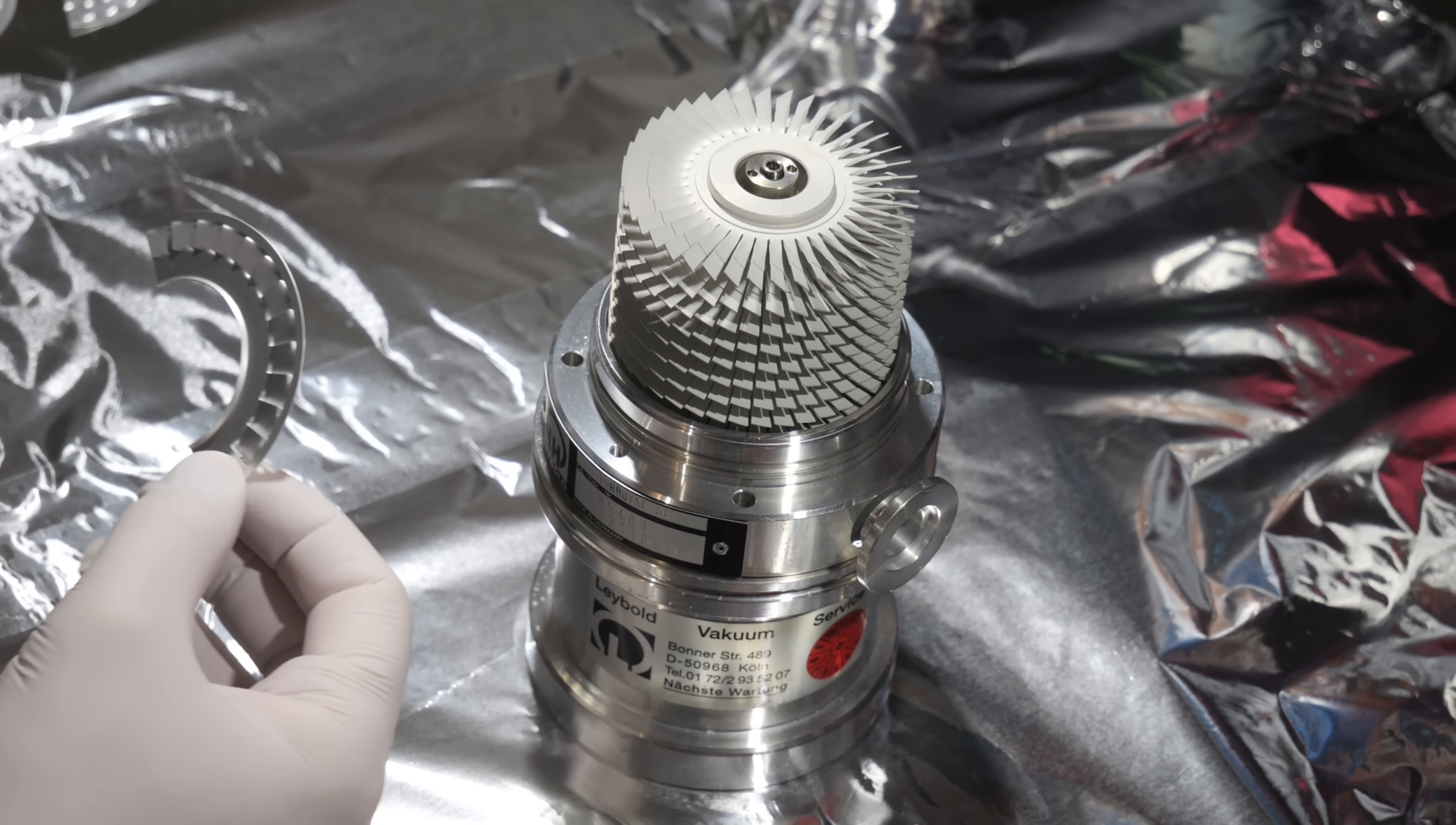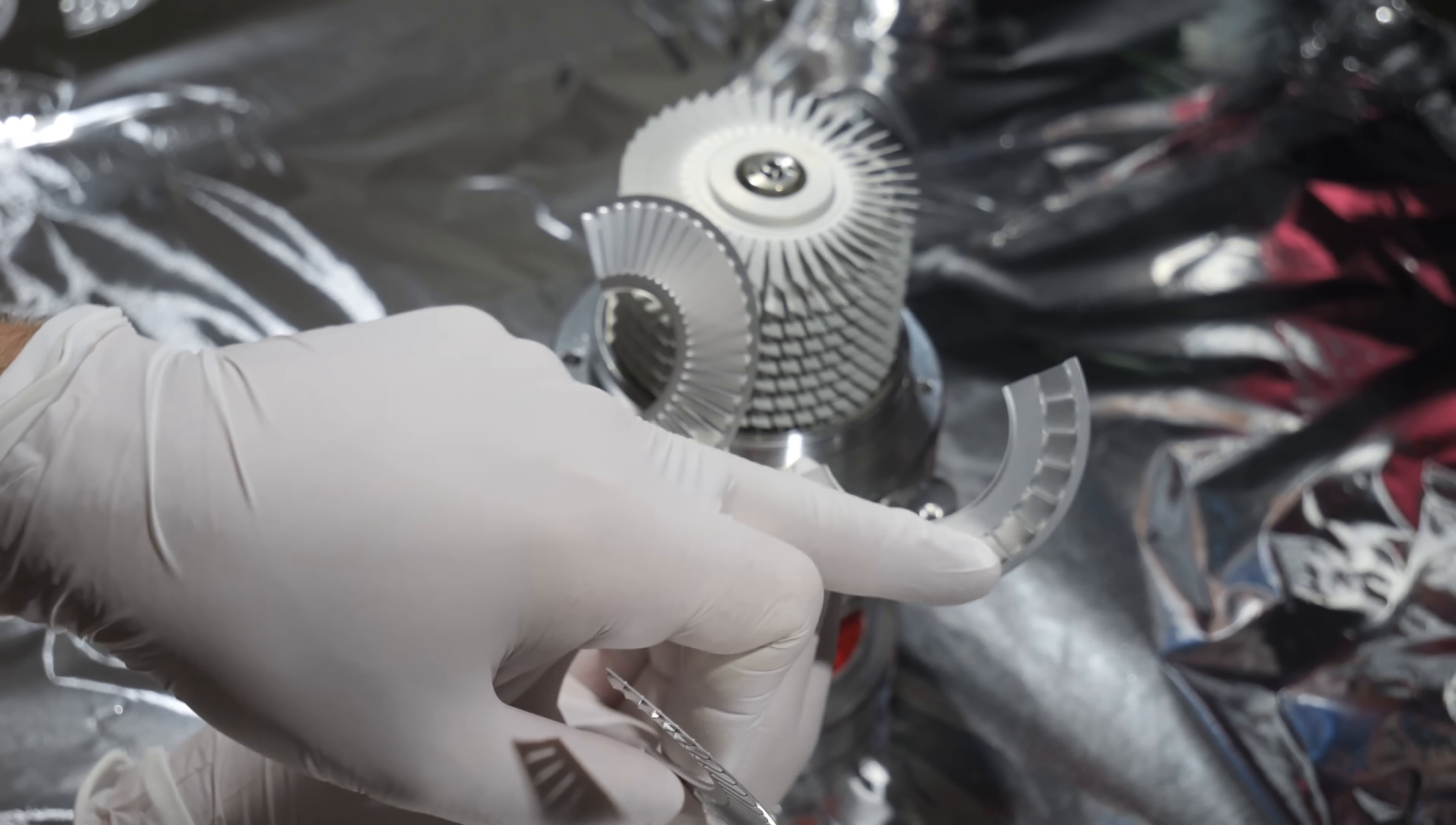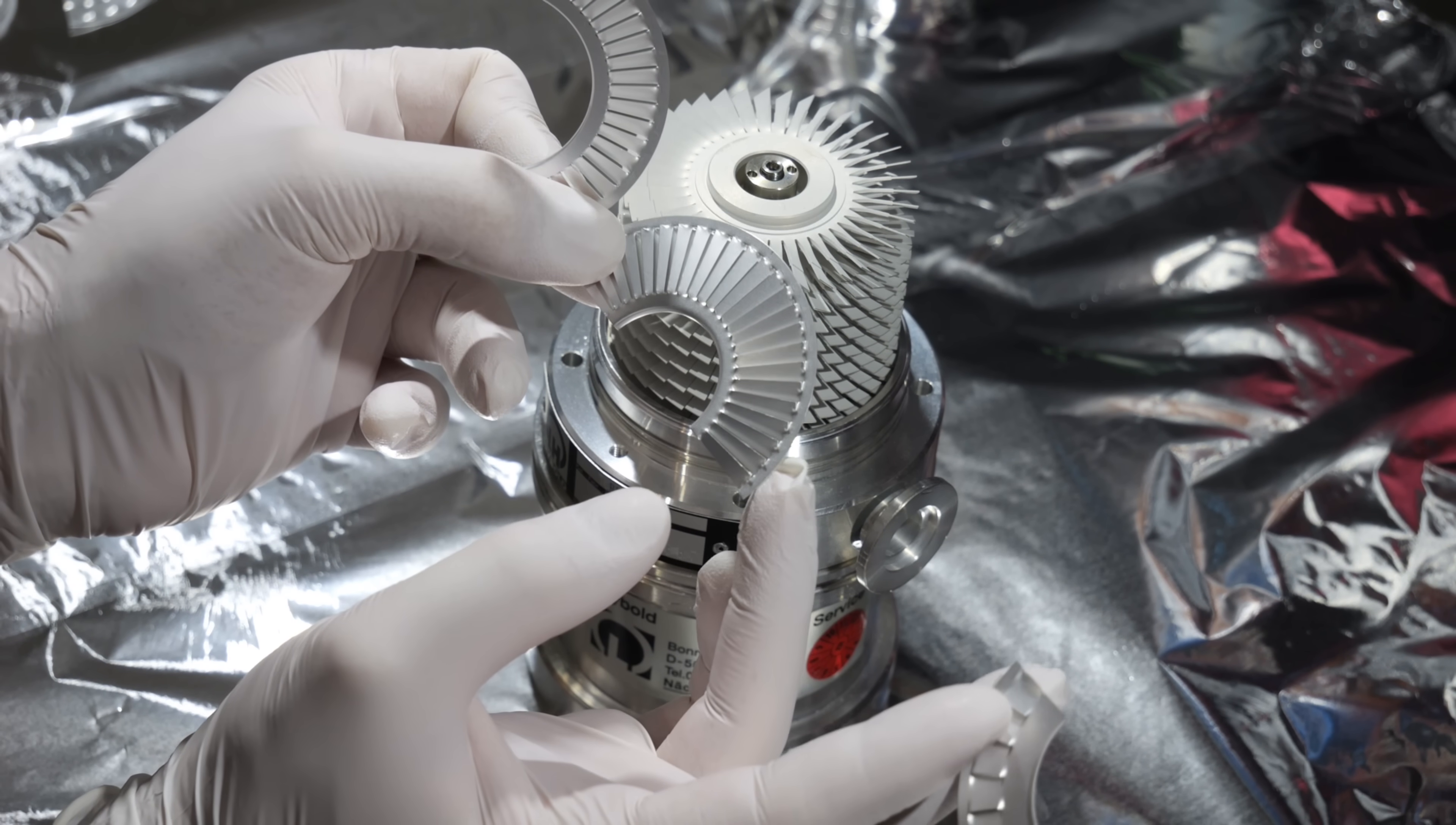There are three different types of stators. These three types here. The one on the right are the ones that go on the bottom. This one here is the middle area and this type of stator here is on the top.